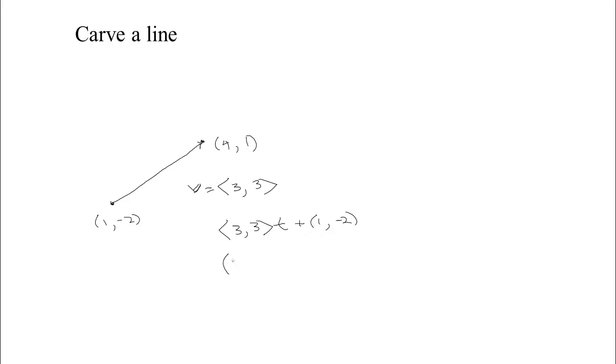Now I can combine that into a single piece. If I distribute that t and add this 1, so distribute the t here and add the negative 2. Now I have my x and my y as a function of t. Or if we want to think of them as separate functions, x is equal to 3t plus 1, and y is equal to 3t minus 2. Now we should give bounds on t. We're thinking that t is going to start at 0 and end at 1. So we have now parametrized our line.